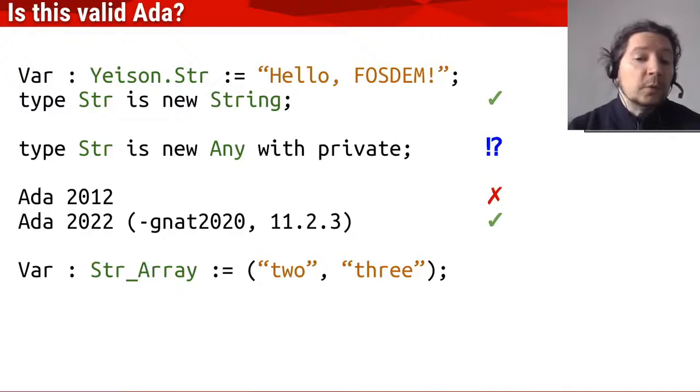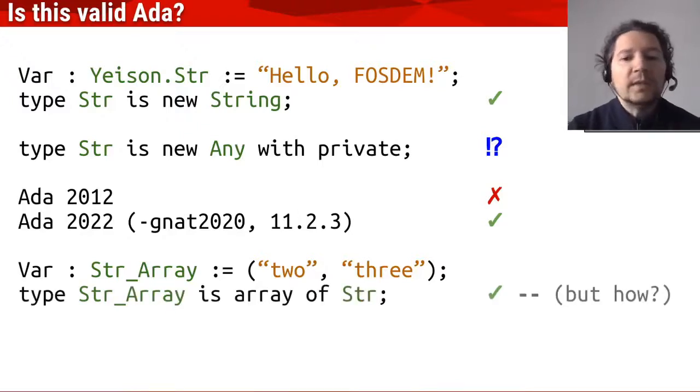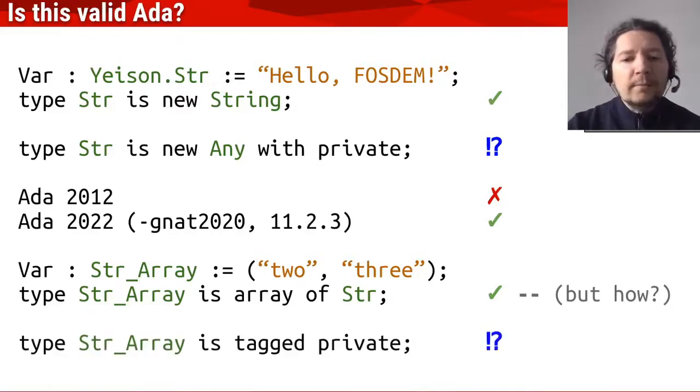So in turn, this means that we can have an array of this type that can be initialized, which is private, so it's definite, although we don't know how to do this, and I will show you shortly.